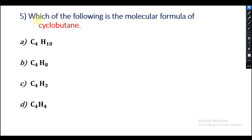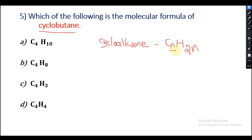Question number 5: Which of the following is the molecular formula of cyclobutane? Cyclobutane belongs to cycloalkanes, and cycloalkanes have the general formula CnH2n, where n represents the number of carbon atoms. So cyclobutane has 4 carbon atoms, making the molecular formula C4H8. Option B has C4H8, so option B is the right answer.